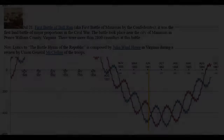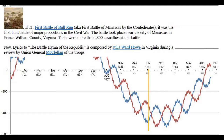On May 21st, 1861, the Confederacy names Richmond, Virginia as their capital. On July 21st, the First Battle of Bull Run — also known as First Battle of Manassas — takes place near the city of Manassas in Prince William County, Virginia. It was the first land battle of major proportions in the Civil War, with more than 2,800 casualties. In November, the lyrics to the Battle Hymn of the Republic are composed by Julia Ward Howe during a review of Union troops by General McClellan.